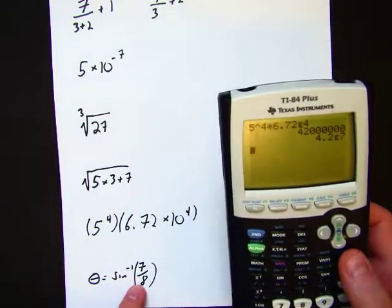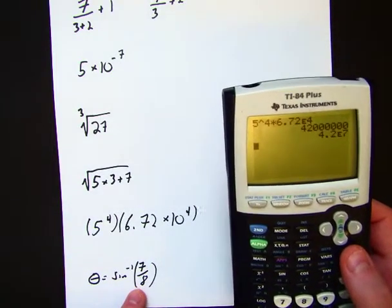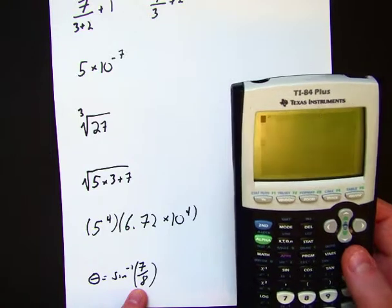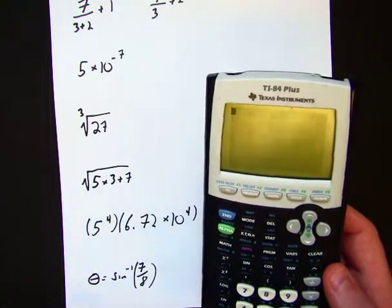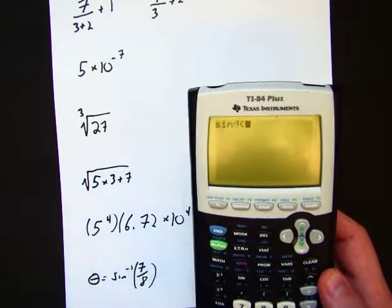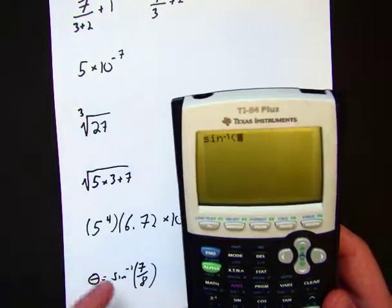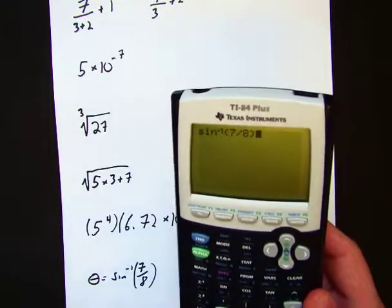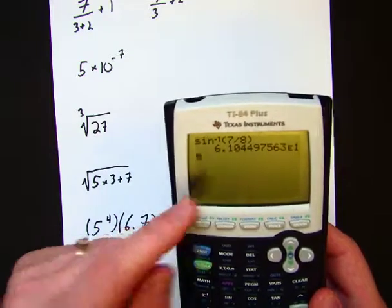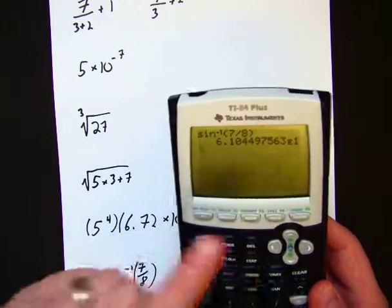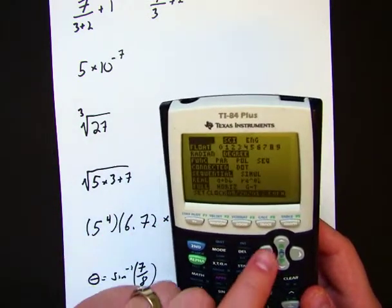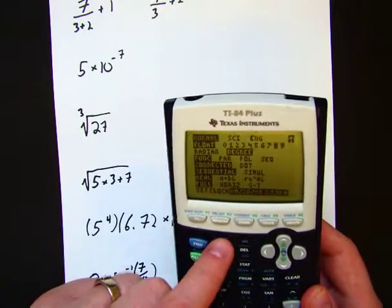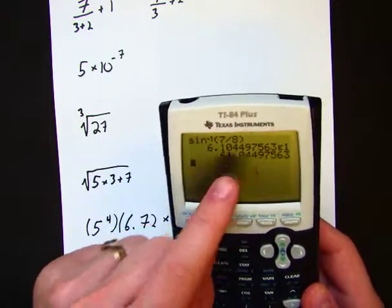The last one here is just how to deal with inverse sine. Inverse sine is actually not that complicated. In order to do this, you're going to have to use a second function. So I'm going to hit second function sine. That'll give me the inverse. And now I just put 7 over 8, and close my parenthesis, and I get my answer. Of course, it's still reading it in scientific notation. I'm going to get rid of that, and make it normal. Quit that. There we go. 61 degrees.